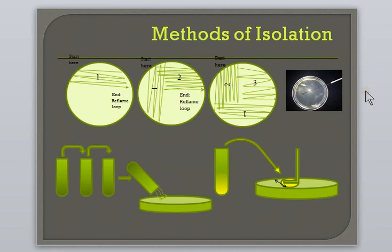You will perform a streak plate technique in lab. In this procedure, an inoculum is spread across the plate in three to four sectors. Bacteria are obtained from the previous sector and streaked across the agar, thus diluting the sample.